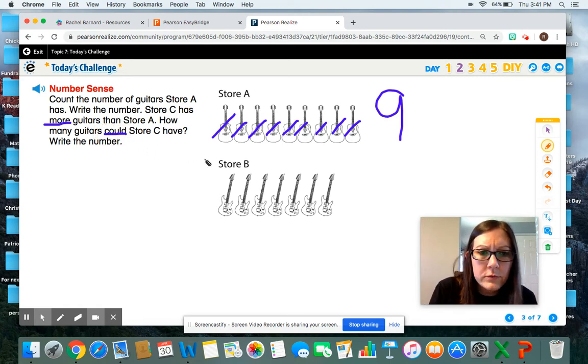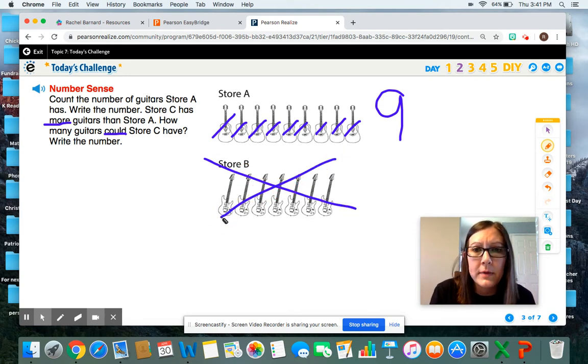We do not need this information for store B today. So I'm going to X that out because we are only looking at the guitars that store A has. And store A has nine.